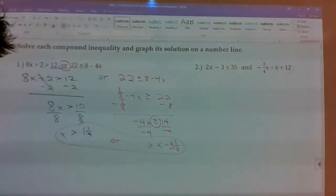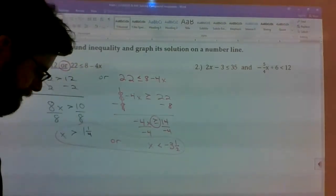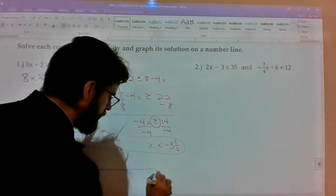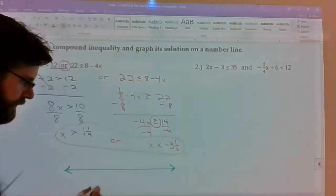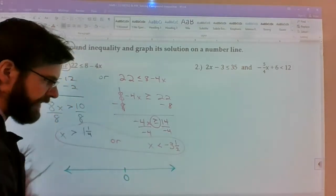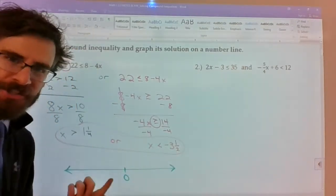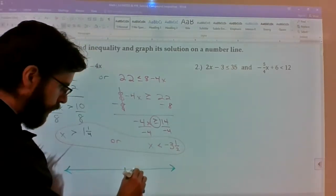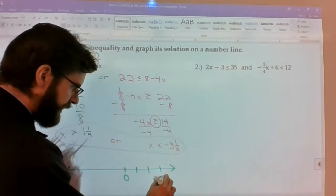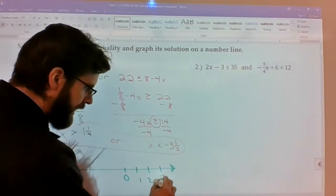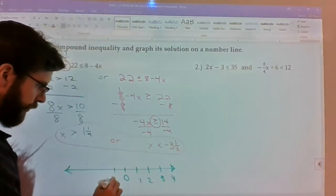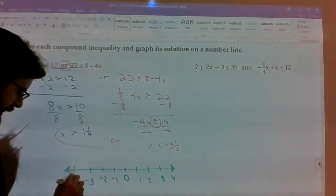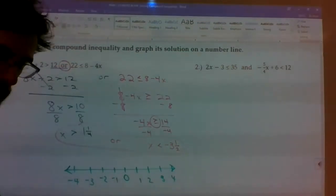When it says solve each compound inequality, we've done the first part right here. Now part 2 is where we actually have to graph it on a number line. So I'm going to create my number line. We need at least 0. Because these are fractions, I'm just going to go by 1's and then do some estimation in the middle. So 1, 2, 3, 4. And then left direction, negative 1, negative 2, negative 3, and negative 4. That seems to fit both parts.